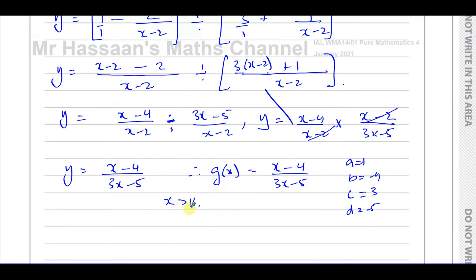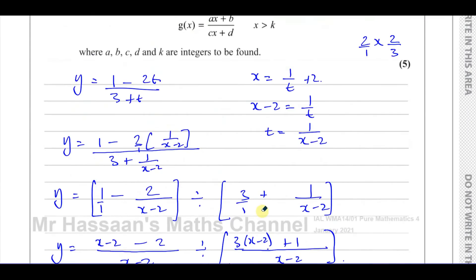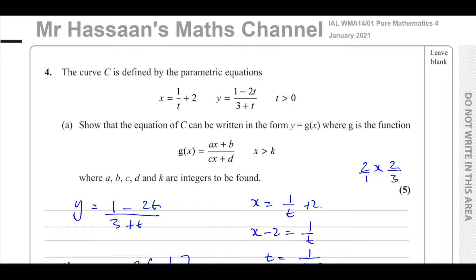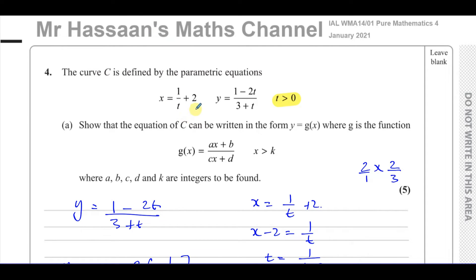How do we work out the domain of this function? Some people might say x can't be whatever makes the denominator zero — that is, 3x minus 5 equals 0, so x equals 5 over 3, meaning everything except that value. However, that's not true, because the original function had the restriction t is greater than zero, and what we need to understand is that the x part of the parametric equation represents the domain of the original function.